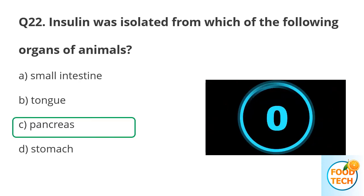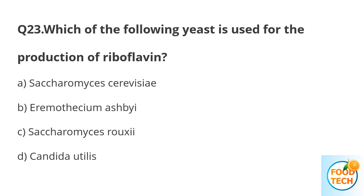Answer C. Pancreas. Question 23. Which of the following yeasts is used for the production of riboflavin? A. Saccharomyces cerevisiae. B. Eremothecium ashbyii. C. Saccharomyces rouxii. D. Candida.